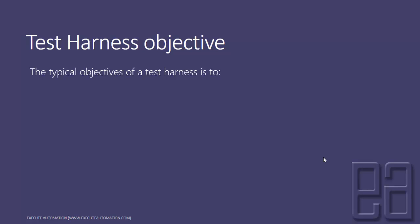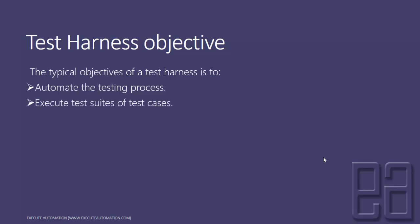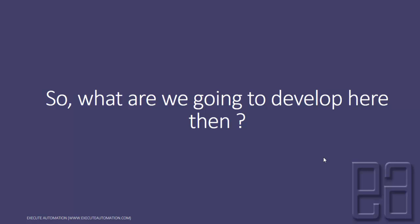The typical objective of a test harness system is to automate the testing process — whatever testing we do, we have to automate it — then execute the test suite or test cases, and generate the associated test reports. Once again, this content is taken from Wikipedia. So what are we going to develop here?